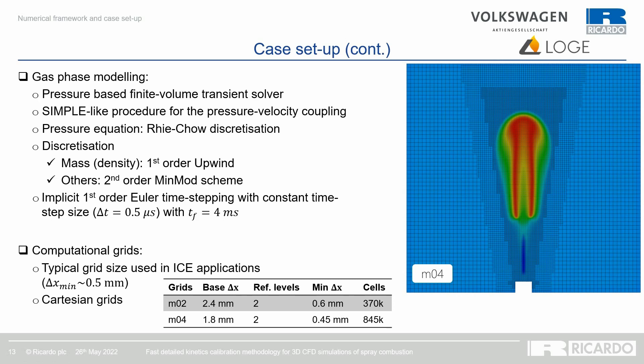Two computational grids are used with grid sizes typical of IC applications, around half a millimeter. The coarse grid M02 uses a baseline cell size of 2.4 mm and two conical refinements aligned with the injector, for a minimum cell size of 0.6 mm and about 370,000 cells. The finer grid M04 uses a 1.8 mm baseline cell size and two conical refinements, leading to a cell size of 0.435 mm in the injector region, for a total of about 850,000 cells.